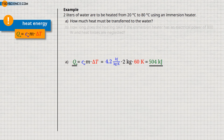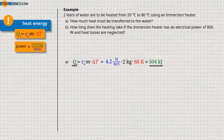Now we would like to determine how long the heating takes if the immersion heater has an electrical power of 800 watts and heat losses are neglected. With the already mentioned definition of power as the quotient of energy and time, we can answer this question. In this case, the term energy refers to the heat emitted by the immersion heater and the term power refers to its heat output, which corresponds to the electrical power of 800 watts.